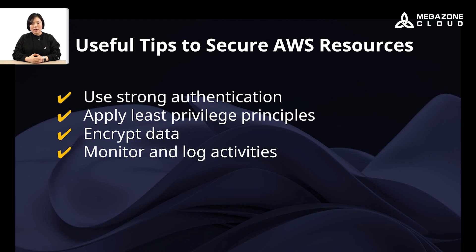Third, enable encryption for data at rest and in transit. You can utilize AWS managed services like Key Management Service for encryption. Lastly, monitor and log activities — set up logging and monitoring mechanisms to track and detect suspicious activities. Utilize services like AWS CloudTrail for comprehensive audit trails and AWS CloudWatch for real-time monitoring and alerting.